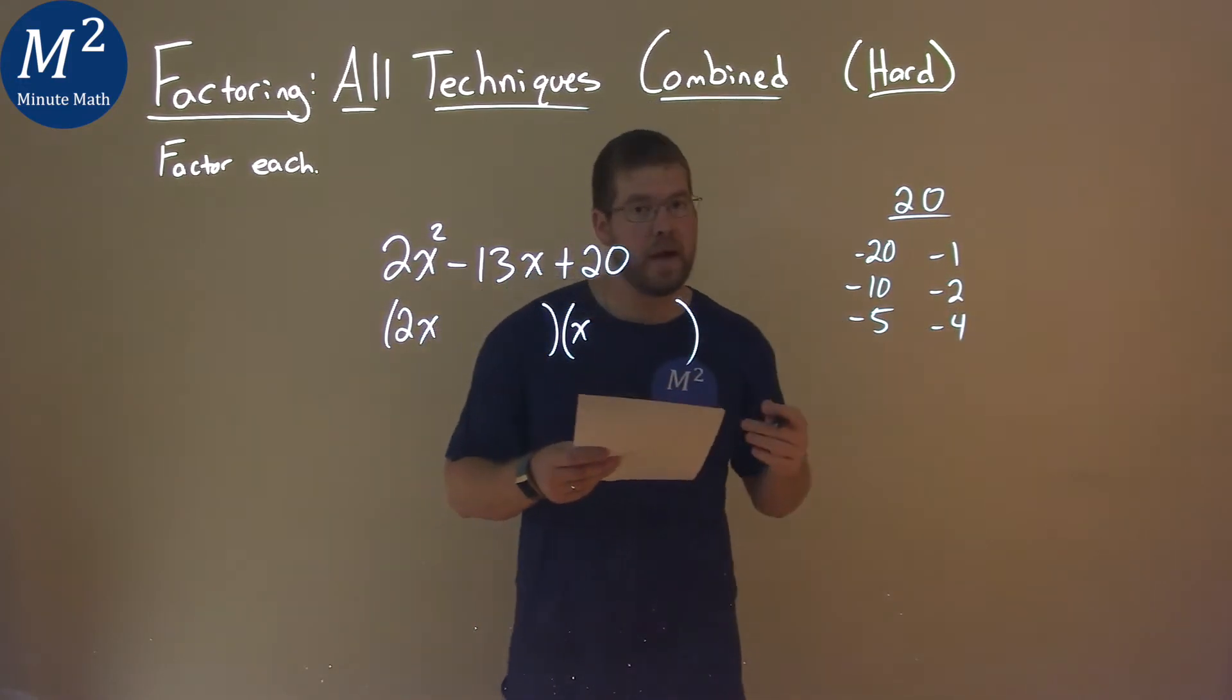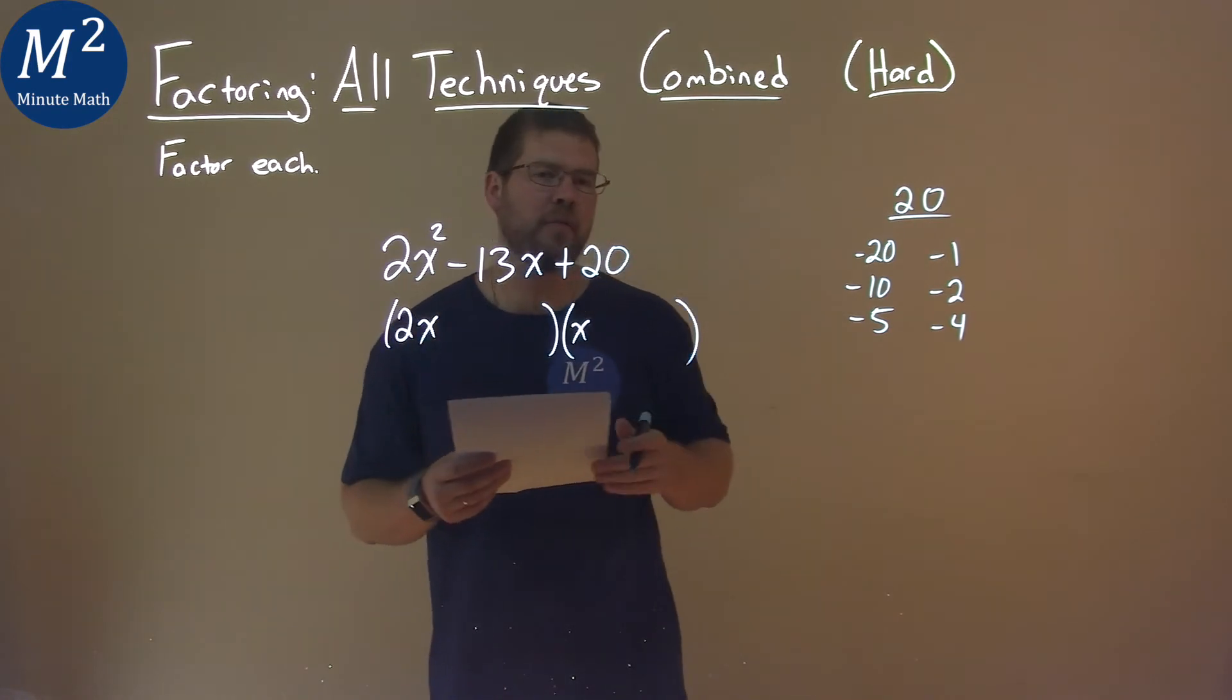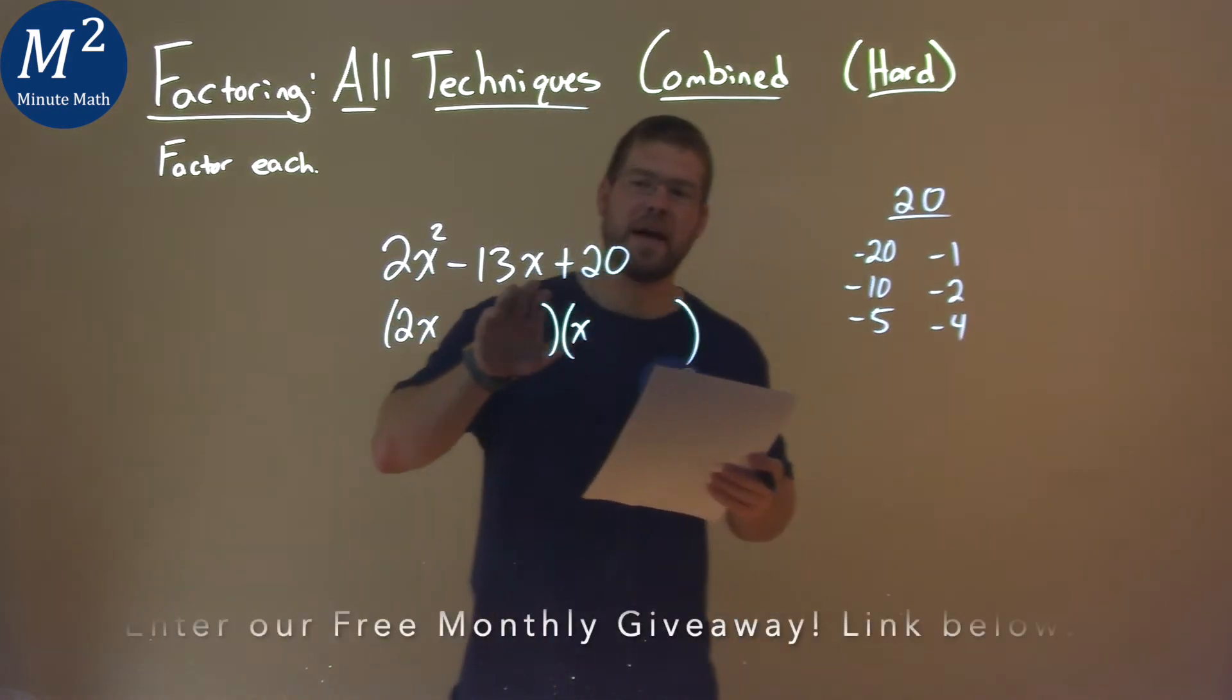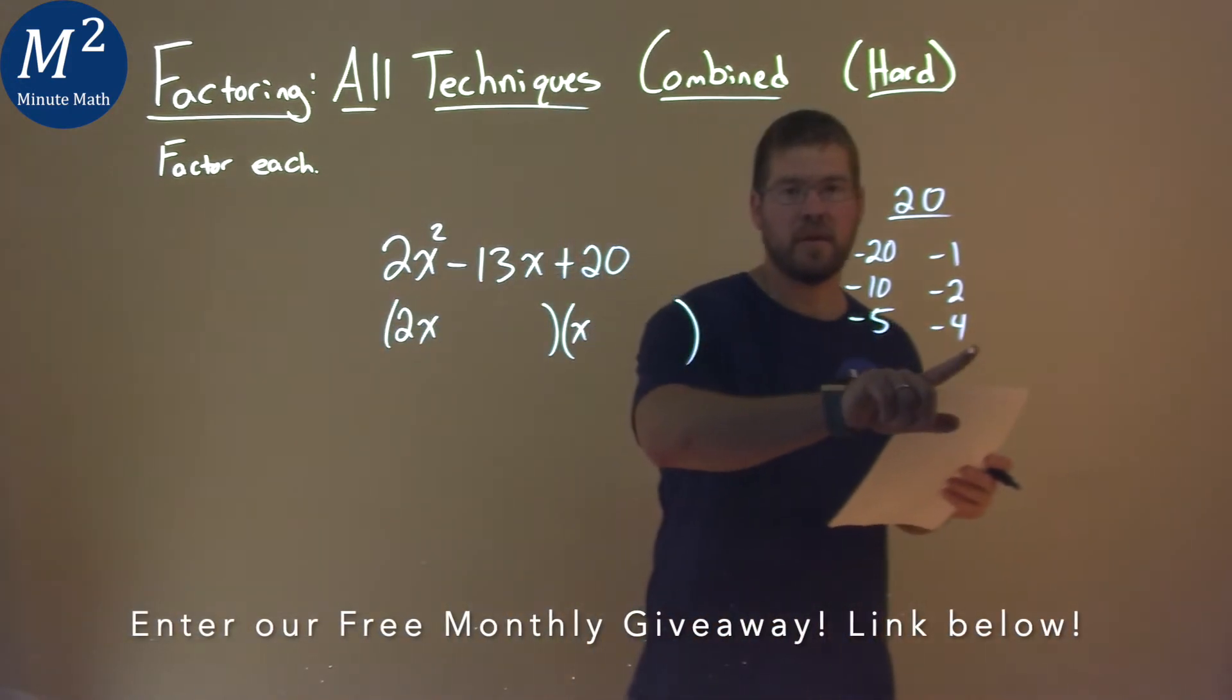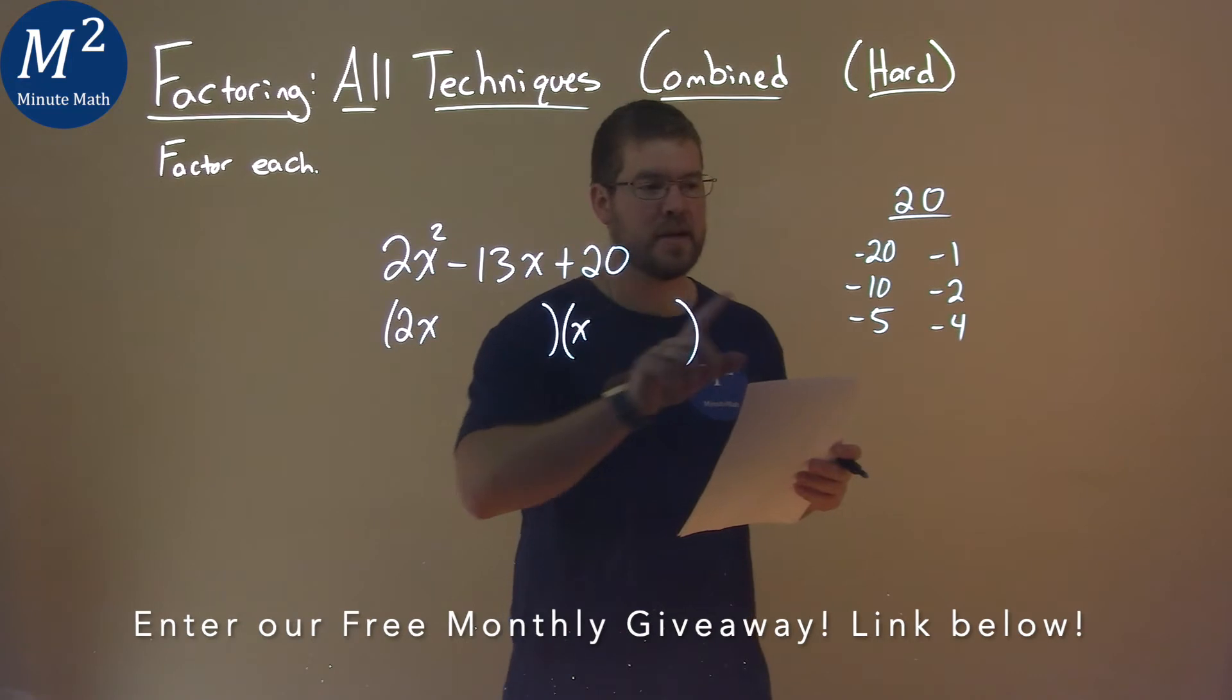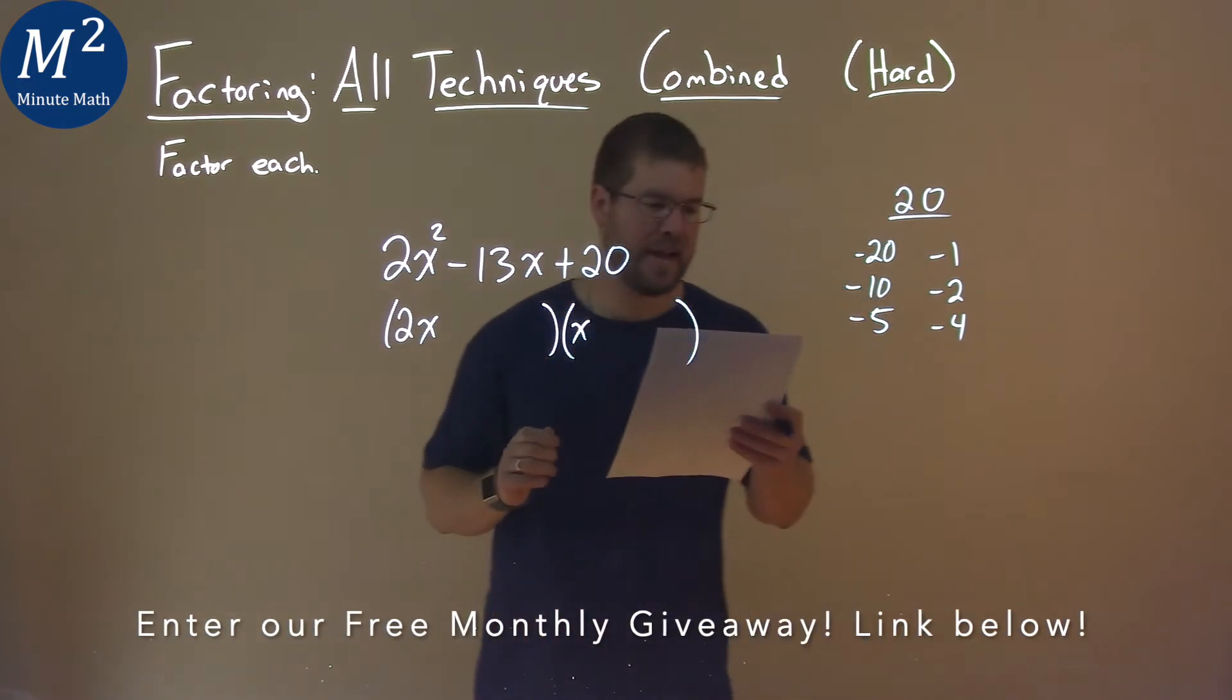Each one of these pairs multiplies to positive 20. So now we have to find, not specifically, which ones add to be negative 13, but 2 times one of the numbers in a pair plus 1 times the other one gets us negative 13.